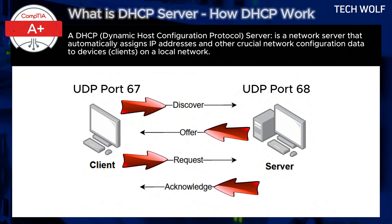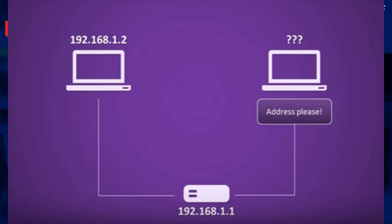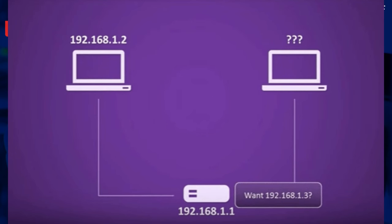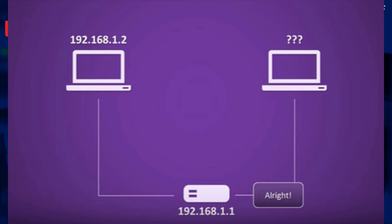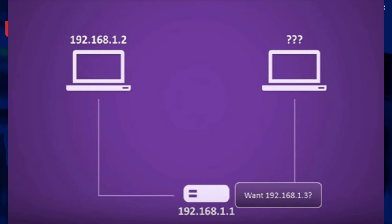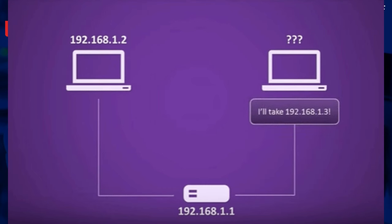When a device leaves the network and disconnects, the IP address remains assigned to it for the lease duration specified by the DHCP server. If the device doesn't reconnect before the lease expires, the IP address returns to the available pool on the DHCP server, ready to be reassigned to another device. Here is why the UDP protocol is used: efficiency. UDP is a connectionless protocol, meaning it doesn't establish a persistent connection, reducing latency and making it suitable for quick exchanges like DHCP.